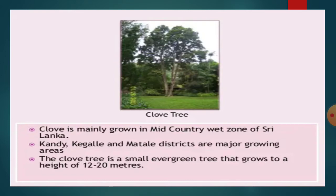Clove is mainly grown in the mid-country wet zone of Sri Lanka. Candy, Kegalle, and Matale districts are major growing areas. The clove tree is a small evergreen tree that grows to a height of 12 to 20 meters.